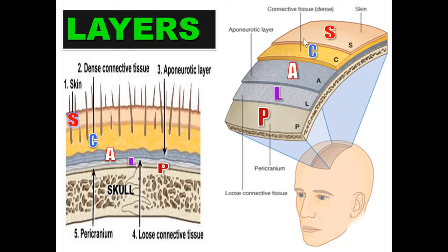The first three layers are fused together and they move on the loose irregular connective tissue.